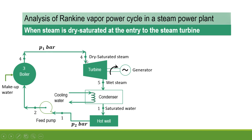After isentropic expansion in the steam turbine, the dry saturated steam gets converted into wet steam, which is then provided to the condenser. In the condenser, cooling water is supplied and absorbs the latent heat from the wet steam, converting it to saturated water. This saturated water is stored in the hot well, and from the hot well it is fed back via the feed pump to the boiler. Make-up water is provided to maintain the predetermined water level in the boiler.